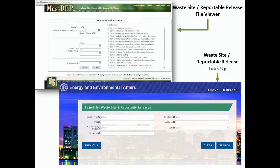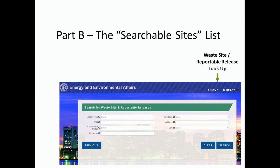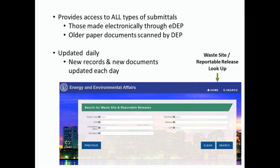That was specific to EDP-submitted documents. In this segment, we'll use the reportable release lookup application, otherwise known as the searchable sites list. This application gives you access to all the submittals, whether they were submitted electronically through EDP, or the older paper documents that MassDEP had scanned. The database behind this application is updated daily.